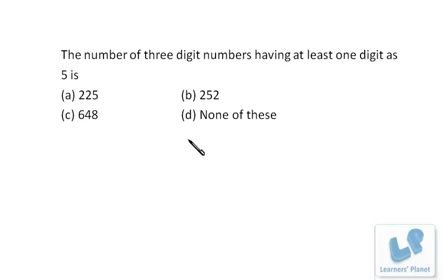So total number of three digit numbers will be, there are three places. For the first place, we have nine choices. For the second place, we have 10 and for the third place, we have 10. So in all, we have already discussed this sort of question. So in all, there are 900 three digit numbers.